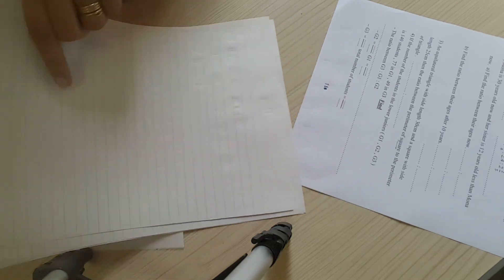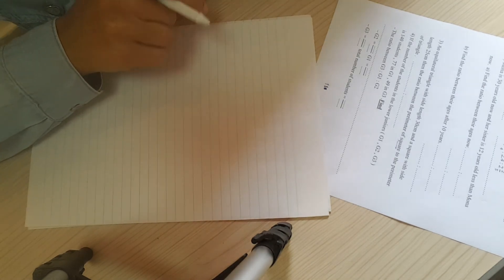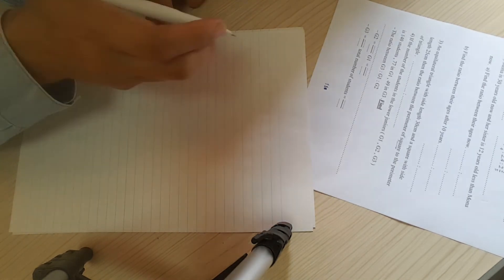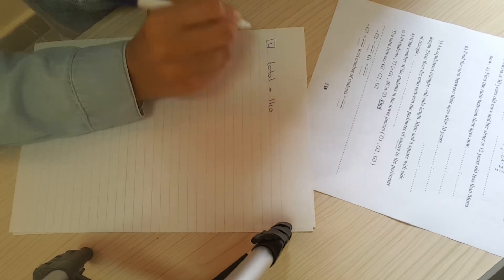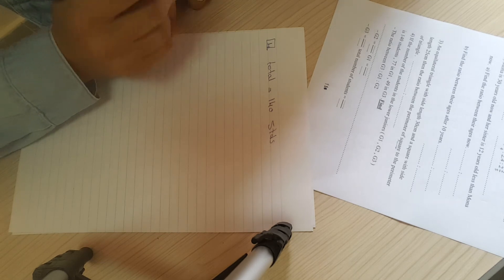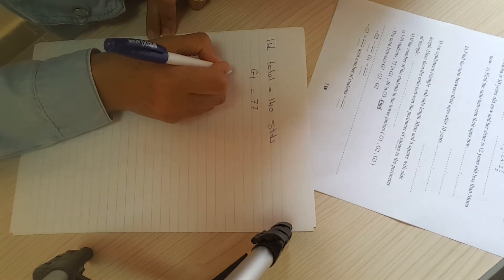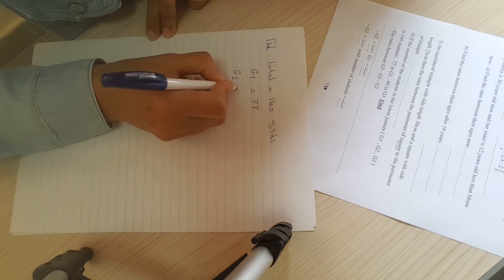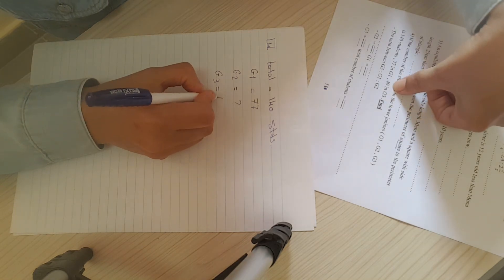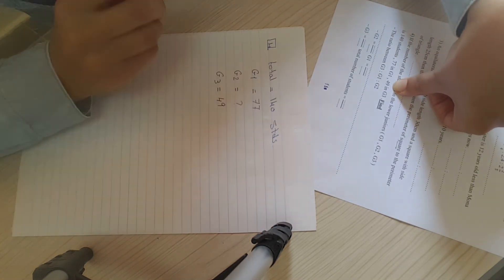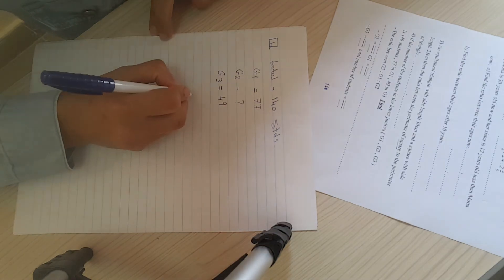In question 4, if the number of students in the lower junior grades 1, 2, and 3, all of them are 140 students total. 77 in grade 1. Grade 2, we don't know it. Grade 3 is 14. I have the total and I want to find how many students in grade 2, so I will make this...